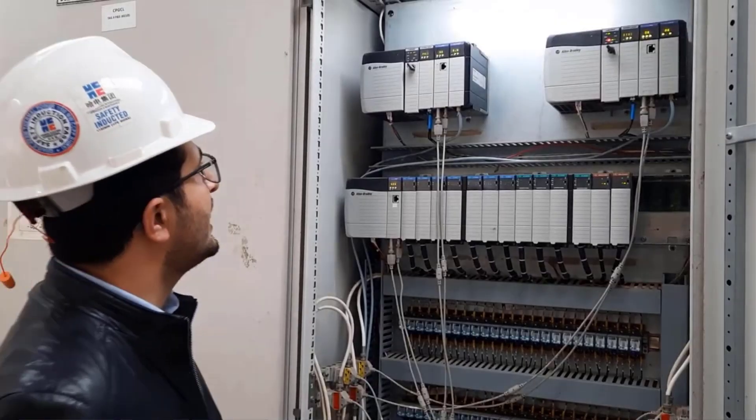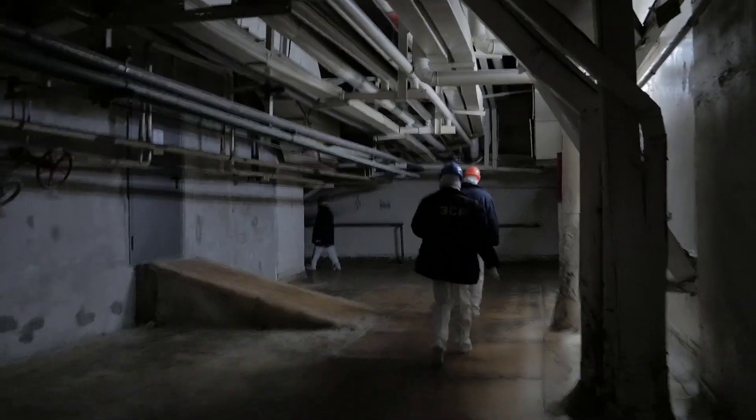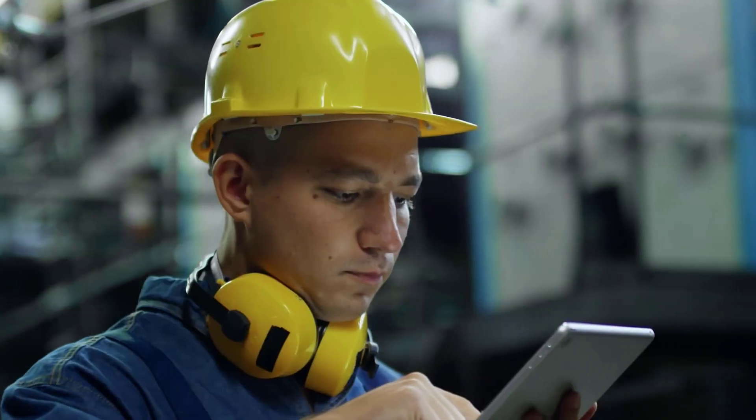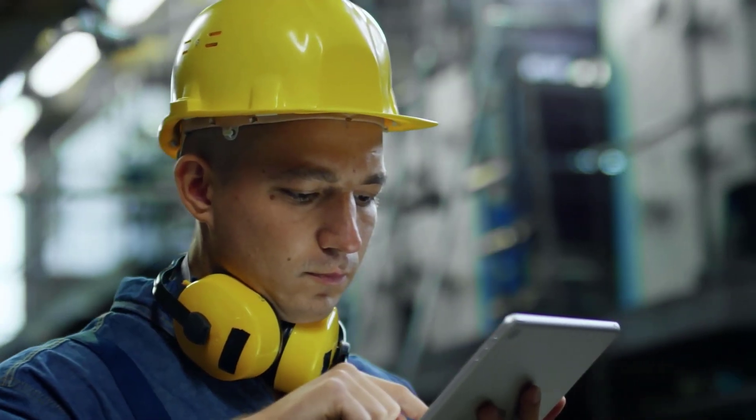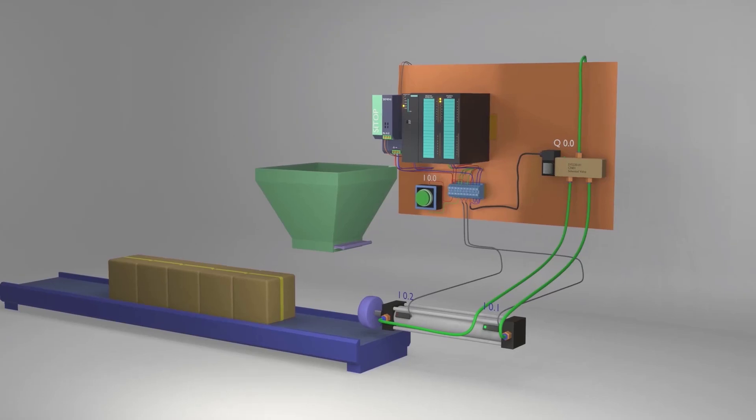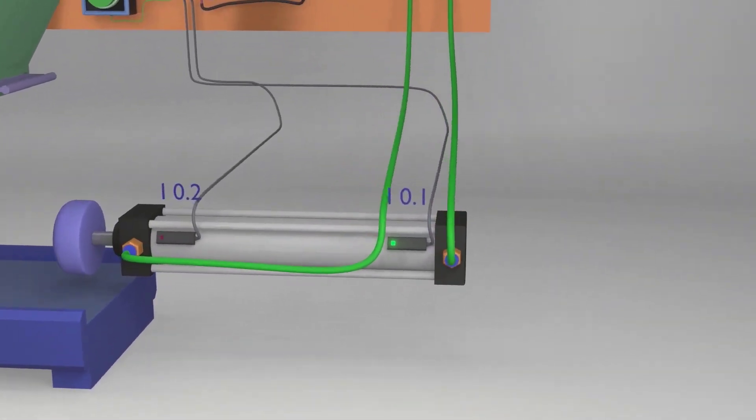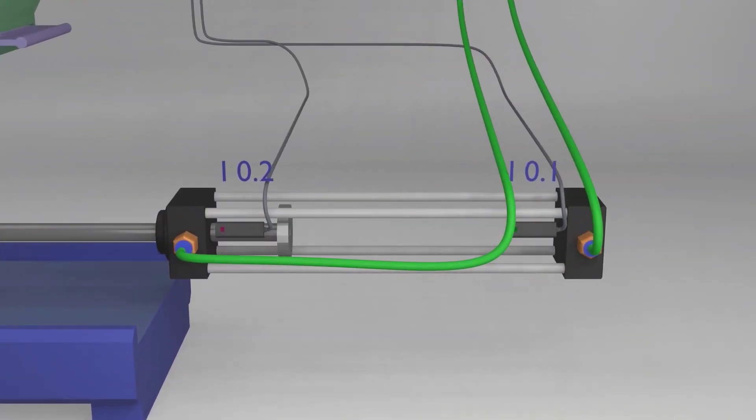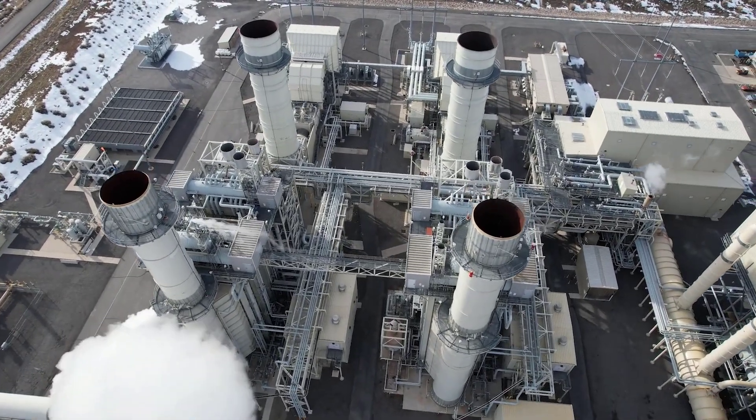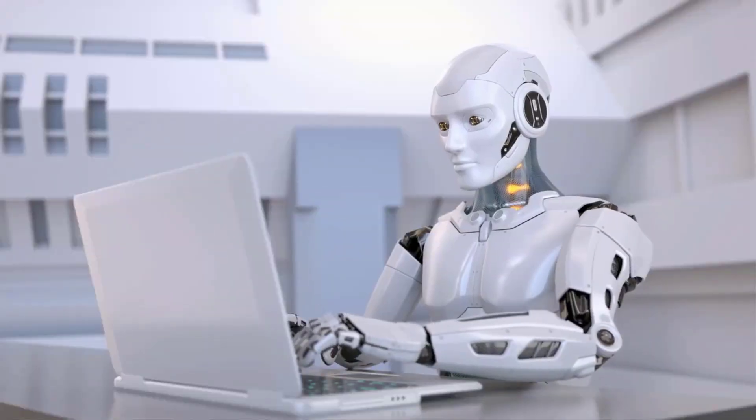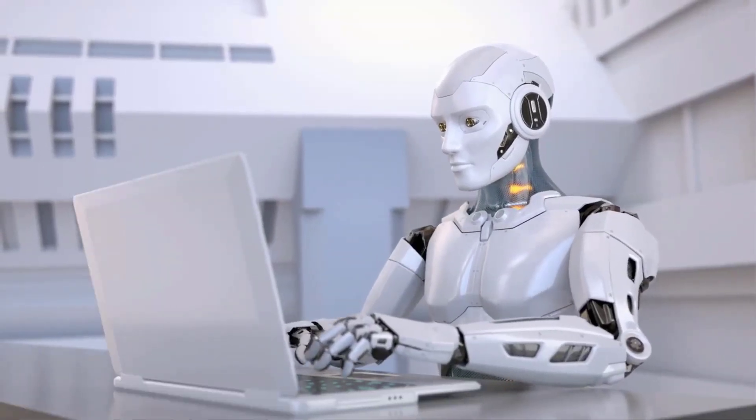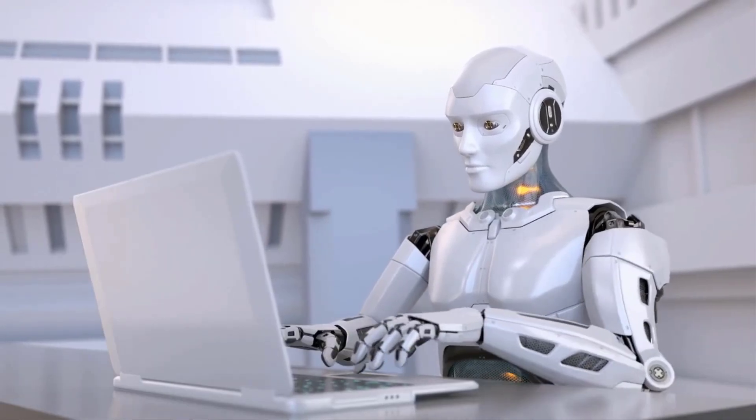What if I told you that you could land a job in PLC and DCS coding within a year, even without a formal engineering degree? Let me introduce you to Alex. He holds an MBA and was working as a supervisor, making $45,000 a year. After dedicating just six months to learning PLC and DCS coding through our mentorship program, he secured his first job as a junior automation engineer, boosting his salary to $75,000 a year. Now he's a senior automation engineer earning $95,000 a year.